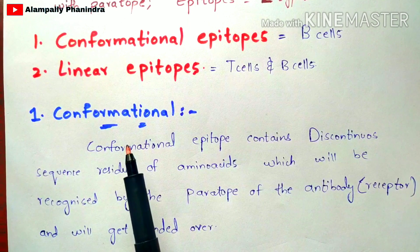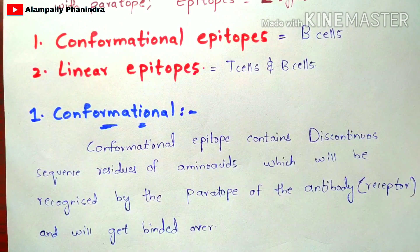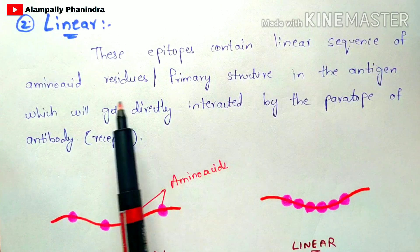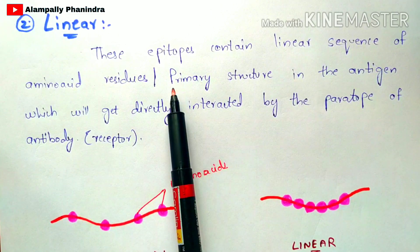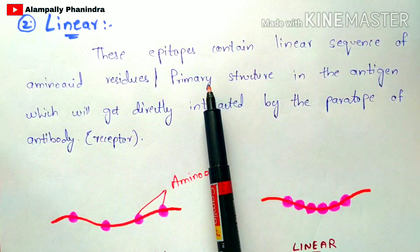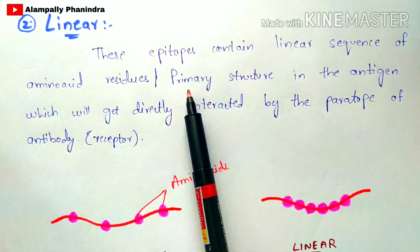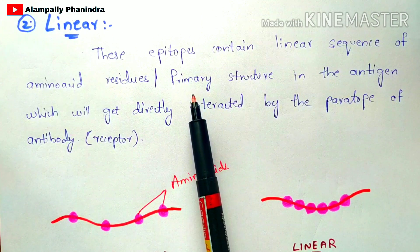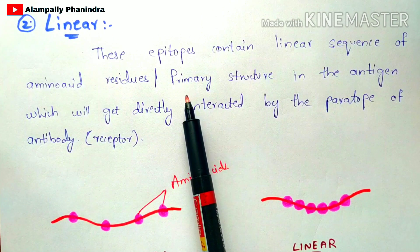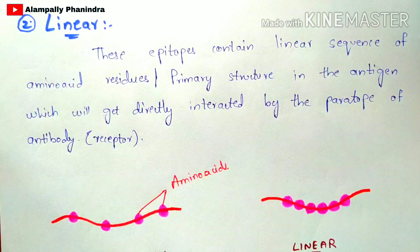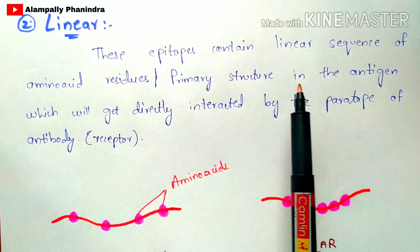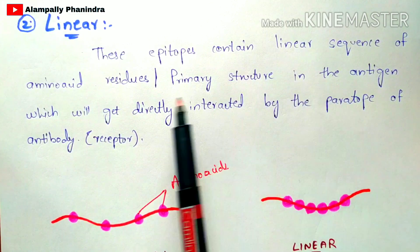Linear epitopes contain a linear sequence of amino acid residues, which is nothing but the primary structure of the protein. If you look at the primary structure of a protein, all the amino acid residues are continuous — not discontinuous. This continuous sequence is present in the antigen and gets directly interacted with by the paratope of the antibody.